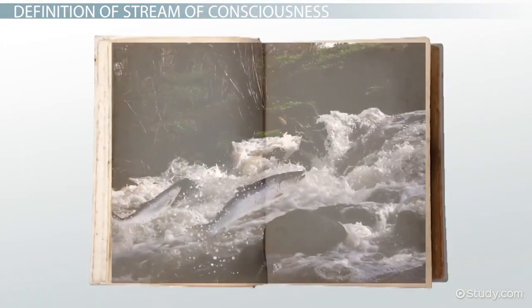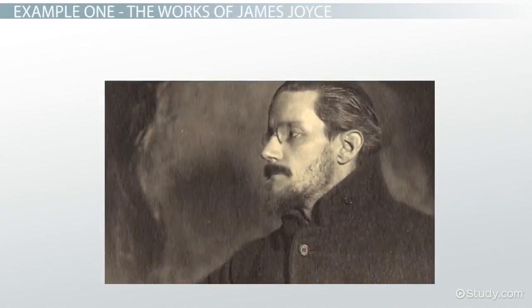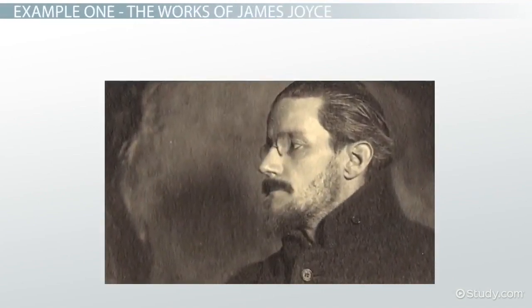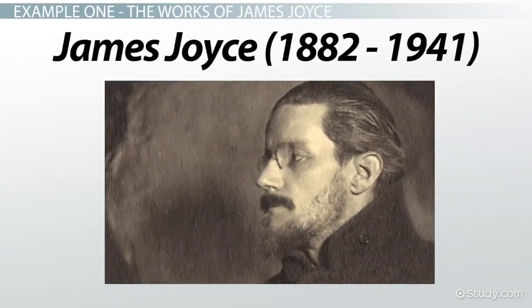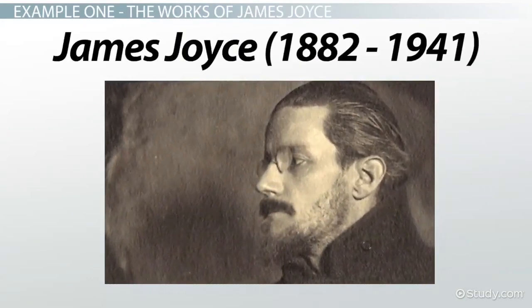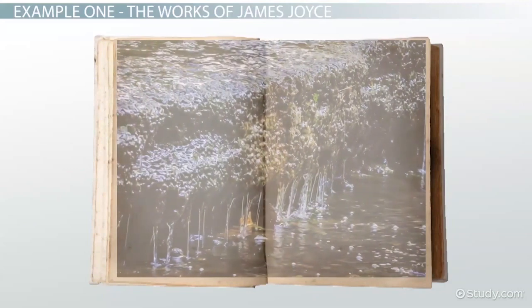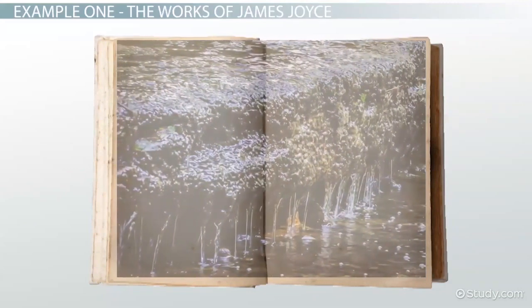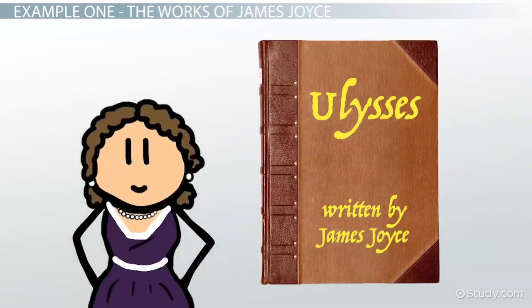Let's look at some examples to see exactly what this means in practice. One of the earliest and best known practitioners of stream of consciousness narration was the modernist writer James Joyce, who lived from 1882 to 1941. One of the most famous examples of stream of consciousness narration occurs in the last chapter of his novel Ulysses, in which Molly Bloom delivers a four thousand three hundred and ninety-one word sentence.